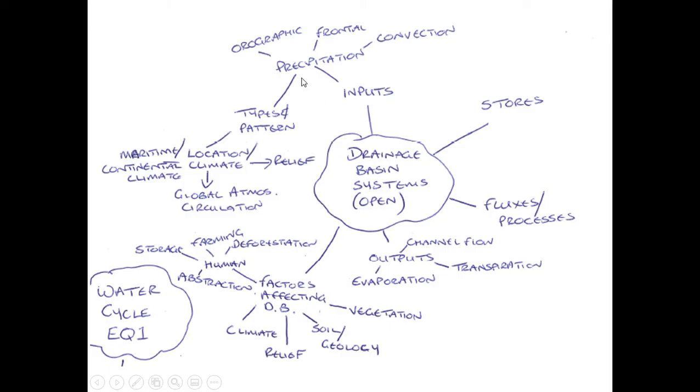The main elements of the drainage basin system - we have the inputs, which is mainly precipitation and the three main types. Orographic, caused by air rising over hills and mountains. Frontal, which is where we have cold air masses meeting warmer air masses, and this is particularly important at temperate latitudes such as the UK. And then we also have convectional rainfall. This tends to be in warmer, hotter areas where the land warms very quickly, forcing the air to rise, taking the water vapor with it.